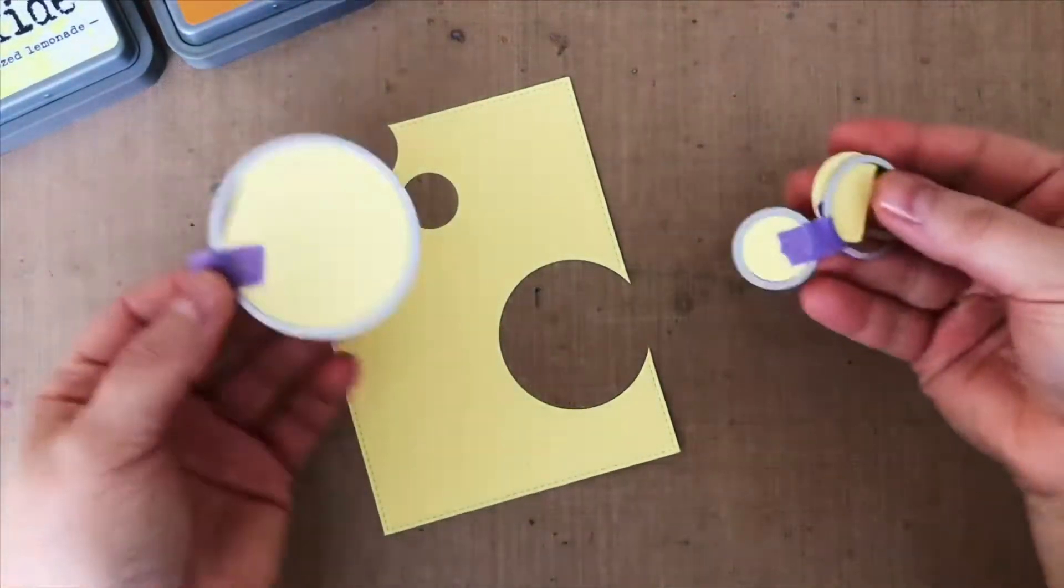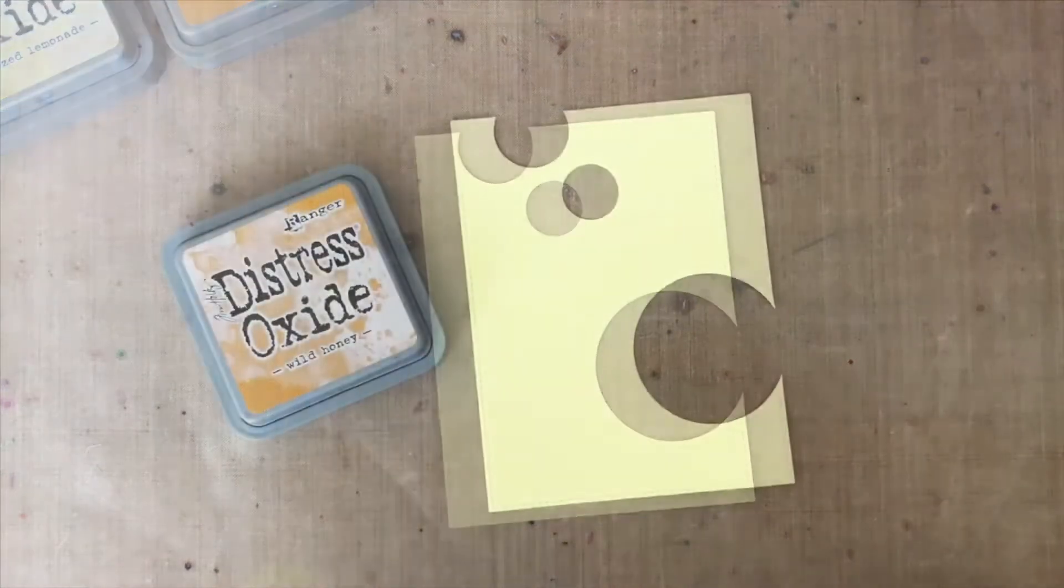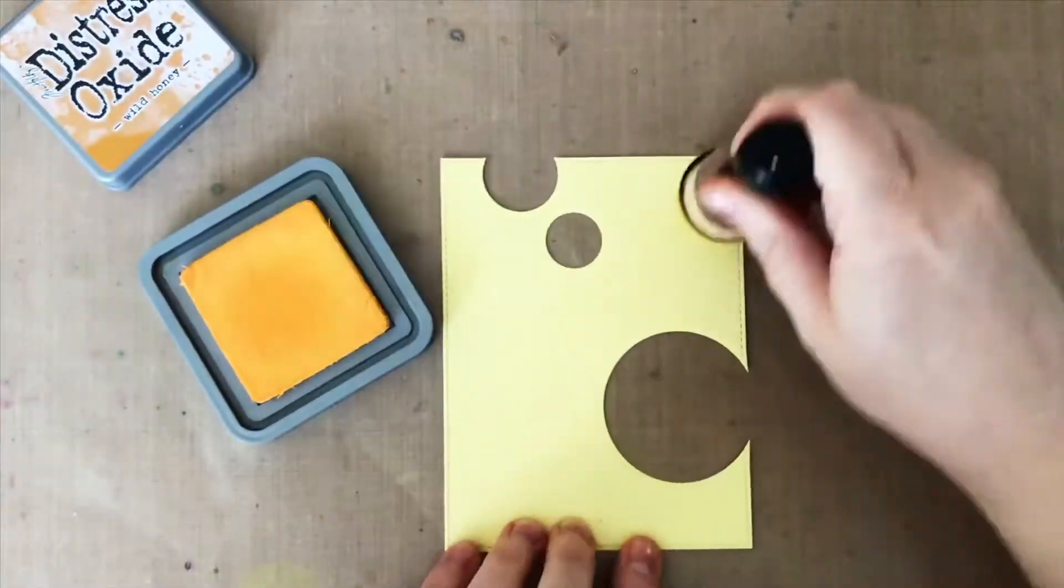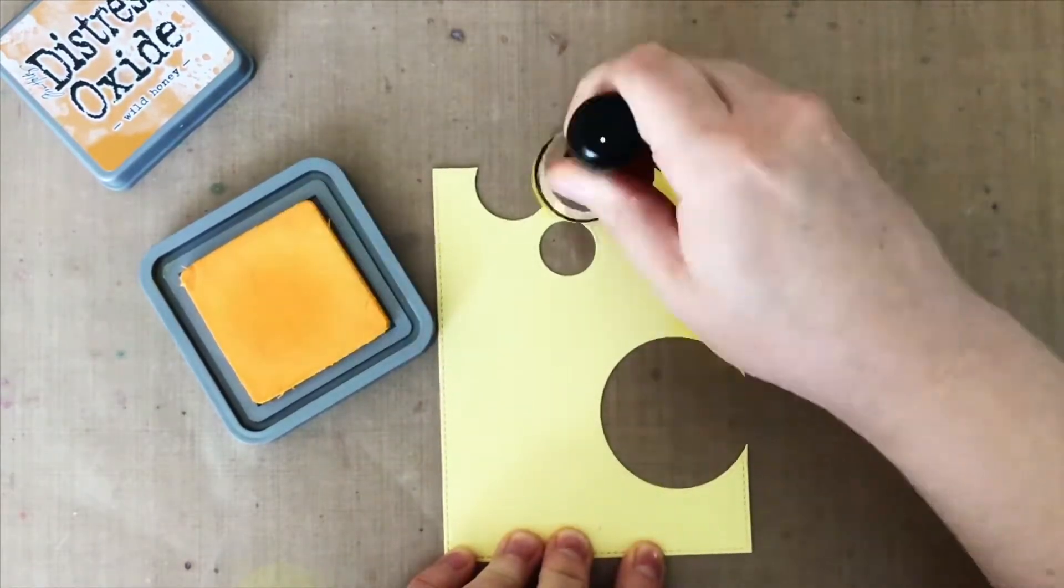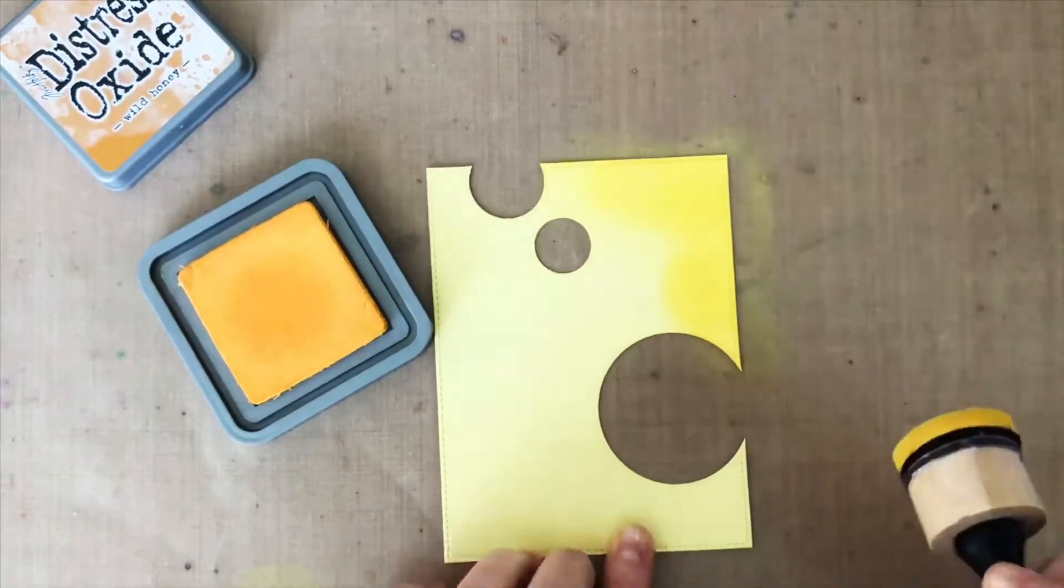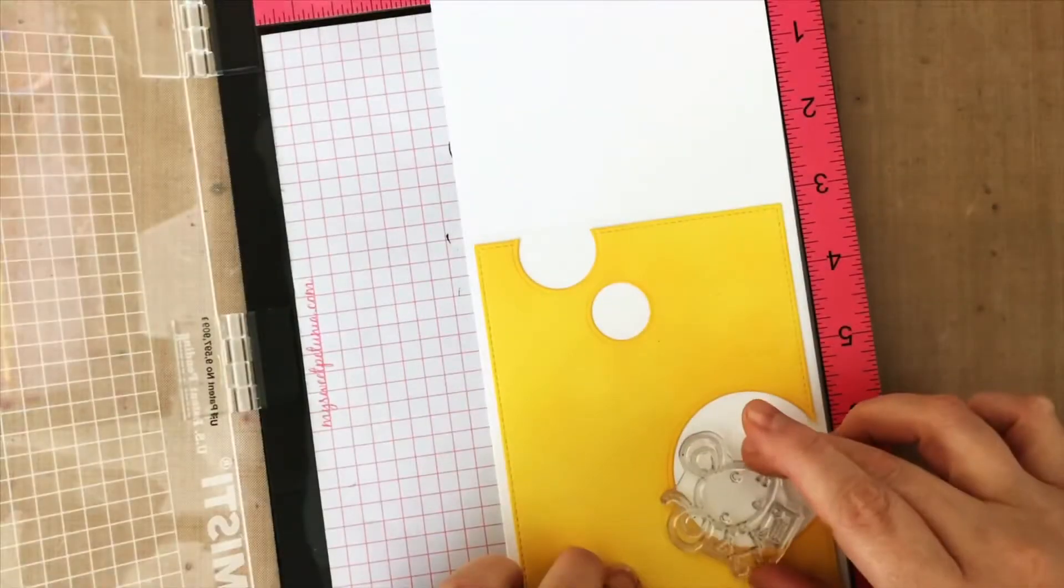I started with just a piece of yellow cardstock and cut some holes from it. Then in true Carly fashion I decided that was not the right shade of yellow, so I added ink to make my own custom bright cheese colored yellow. I'm always inking cardstock to make my own colors instead of just buying those colors. Who knows why?